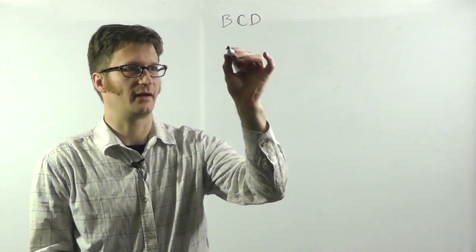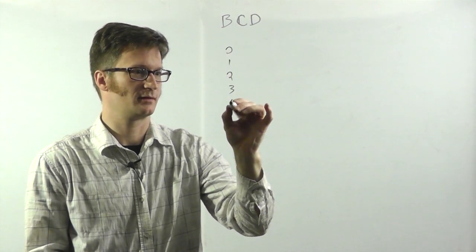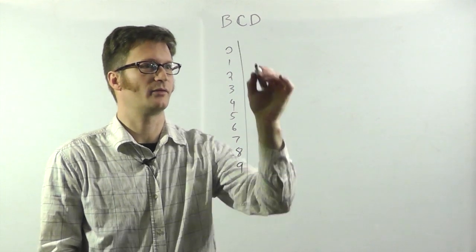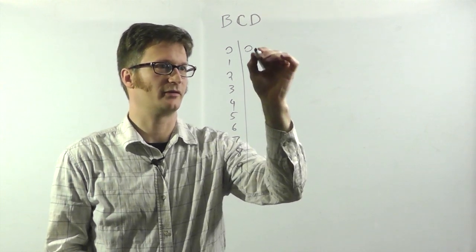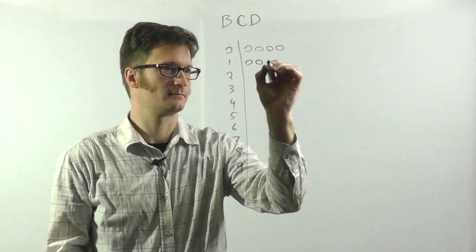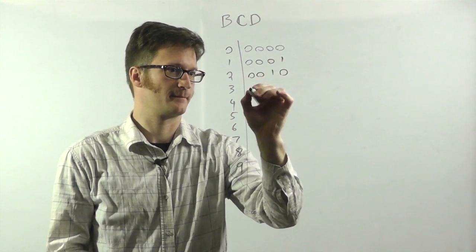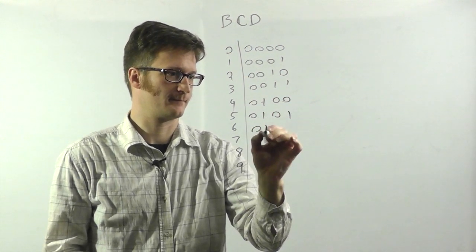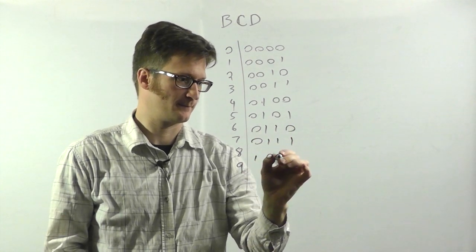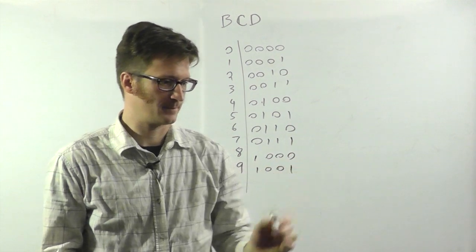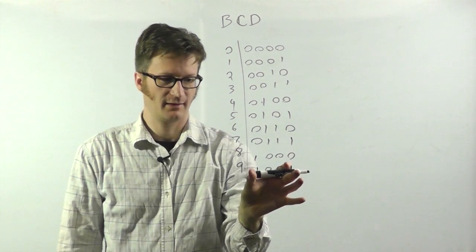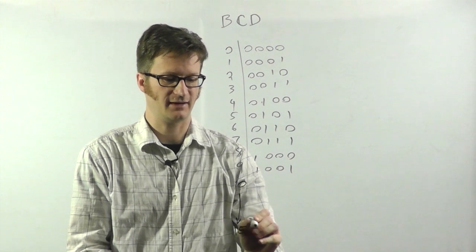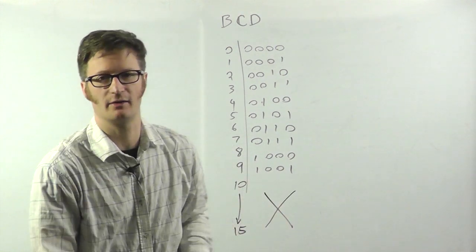Binary coded decimal has the values 0 through 9, and it is encoded with 4 bits per number. So 0, 0, 0, 0 for 0. Now since this is 4 bits, it's possible to have the values up through 15.